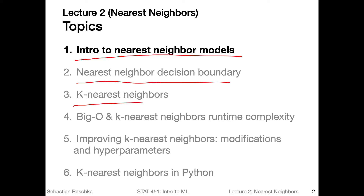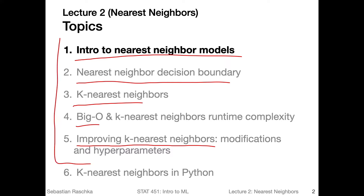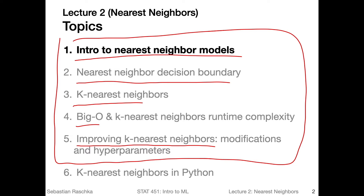After we talk about the nearest neighbor method in general, I will introduce K nearest neighbor methods, for example K nearest neighbor classifiers. This is a very simple concept. After that, we will dive into a more computer science aspect of this lecture and look at the Big O runtime complexity of K nearest neighbor algorithms — a topic that deals with analyzing how efficient an algorithm is. Then I will show you some ideas and tricks to improve K nearest neighbor algorithms. After finishing these conceptual parts, I will show you how to use K nearest neighbors in Python.